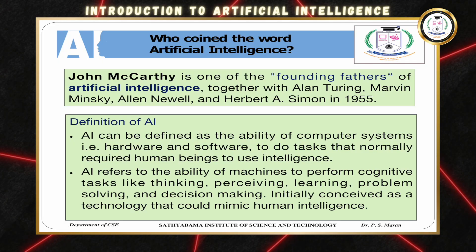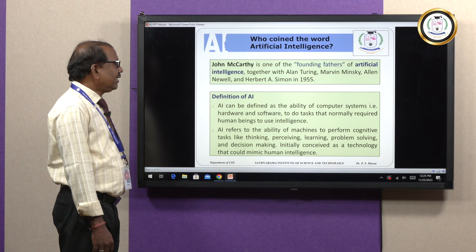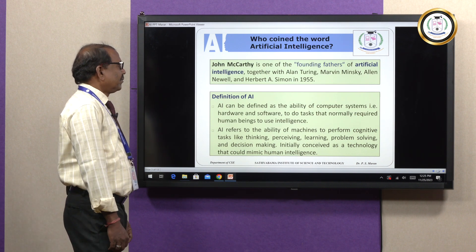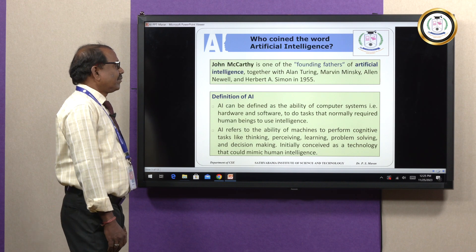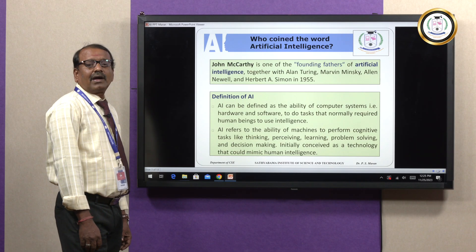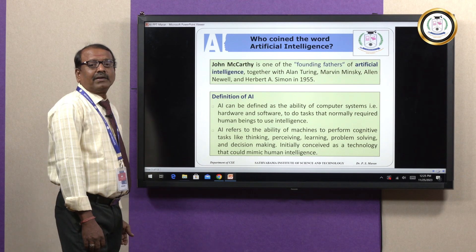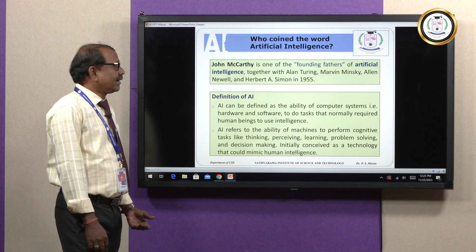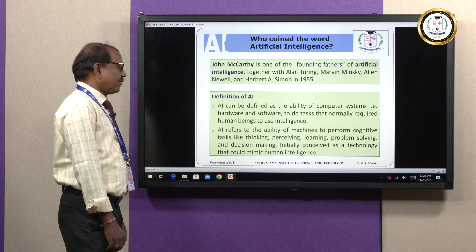Who coined the word artificial intelligence? John McCarthy. He is the father of artificial intelligence, even though there may be many inventors after him. For example, Alan Turing and Marvin Minsky, Alan Newell and Herbert Simon — they all, after the invention by John McCarthy, continued artificial intelligence techniques from 1955 onwards.